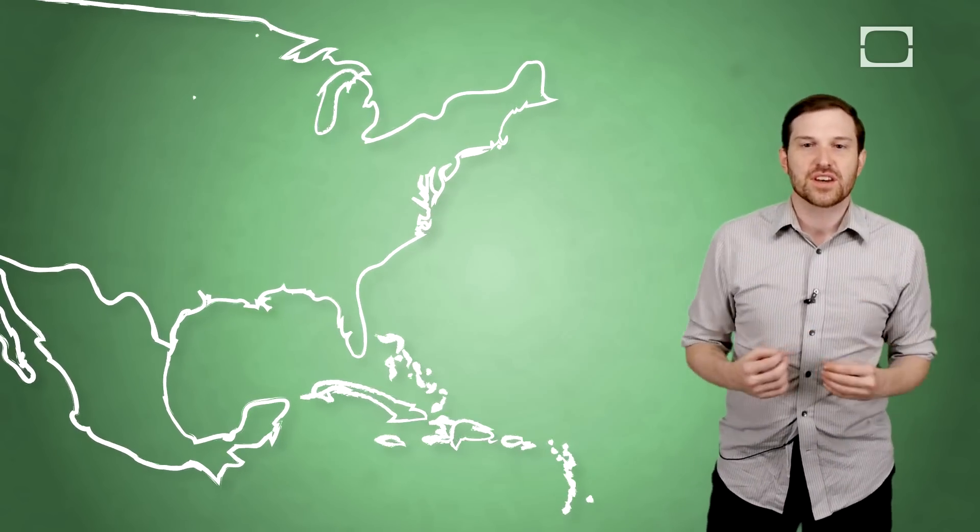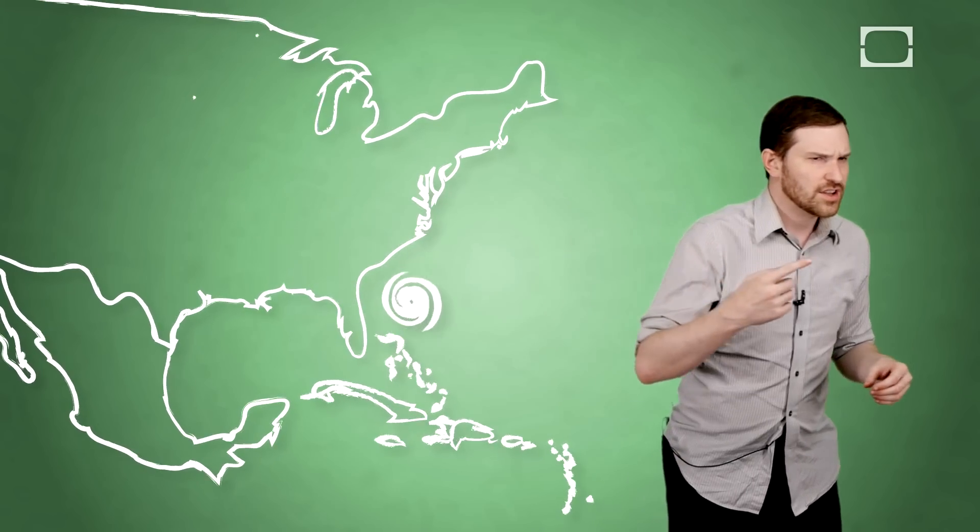The jet streams can cause storms to approach the east coast and then back off. So any number of fronts or pressure zones might be in place over the US as the hurricane stumbles in. And these systems have their own winds and those can influence a hurricane as well.